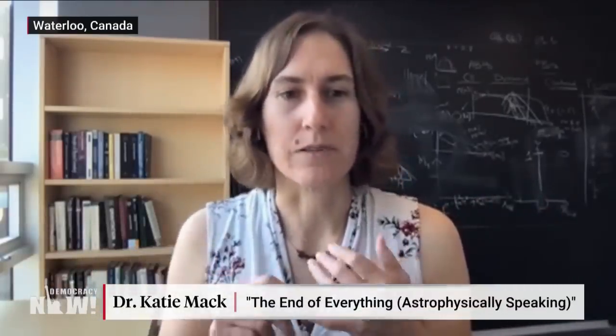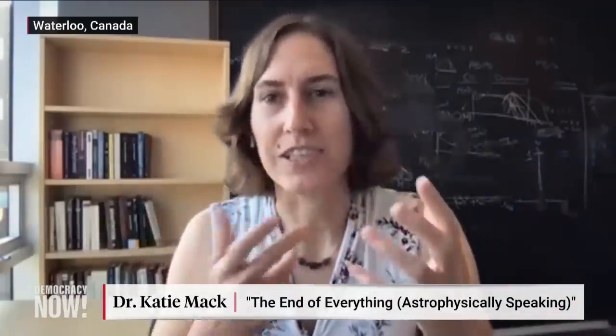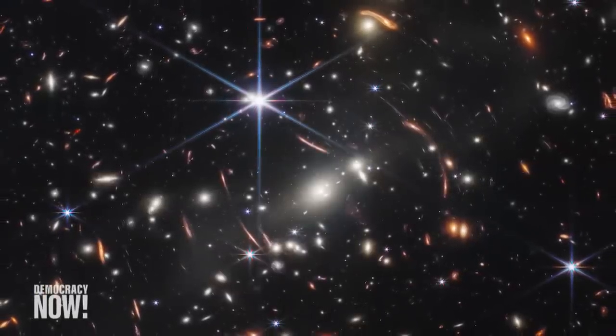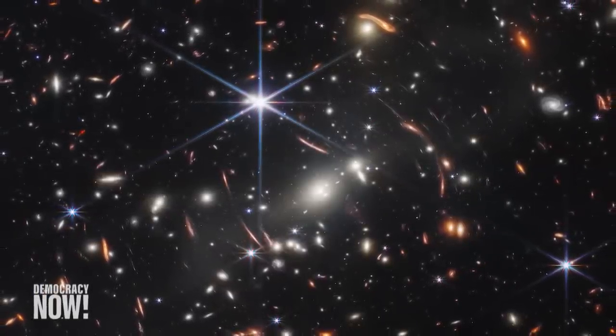it got a deep field looking deep into the cosmos, the farthest reaches of the cosmos, very, very distant galaxies. It got a picture of interacting galaxies, galaxies that are crashing into each other to show how this telescope is able to tease out the details of the gas and dust and stars forming. And it gave us images of a couple of nebulae, one where stars are forming, newborn stars are forming out of the gas and dust, and one where the remains of a dying star are sort of blowing up this bubble in space.